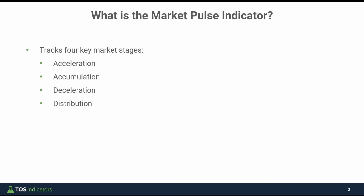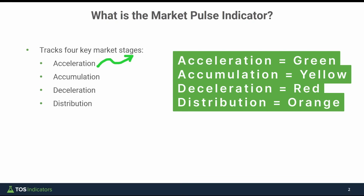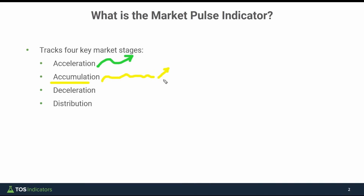The market pulse indicator tracks four major market stages. Acceleration is when the market pulse is green — this is where we're looking for the market to accelerate upwards. Accumulation is yellow, where the market pulse is building strength, telling you we're looking for the market to transition to green but it hasn't yet. Then we have deceleration, the opposite of acceleration, indicating a downward market trajectory. And finally distribution, which similar to accumulation is a bit more of a chop but with more of a bearish bias.